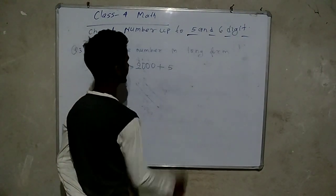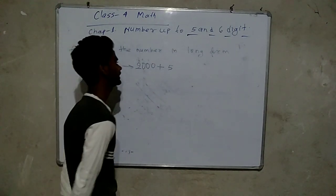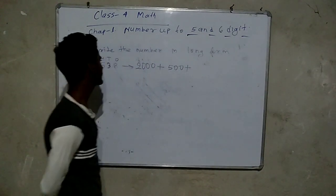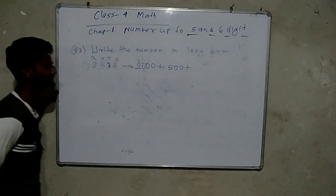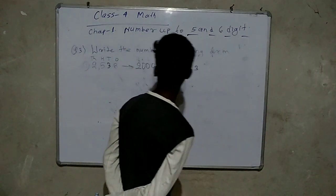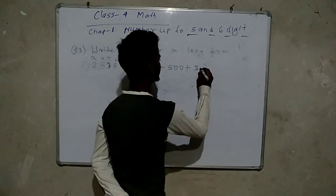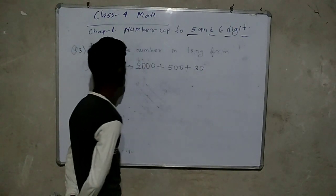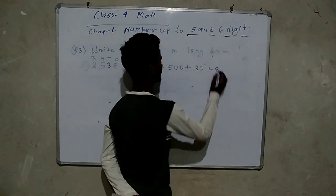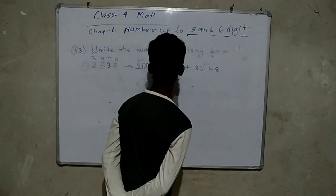Then, ones place has eight — write 8. After eight there is no more number. So the long form is: 2000 + 500 + 30 + 8.